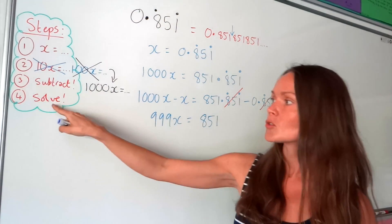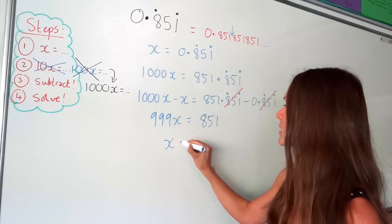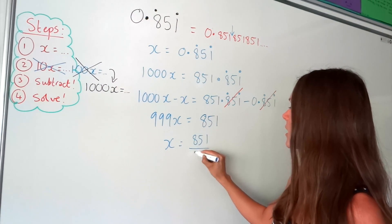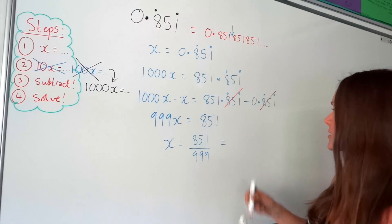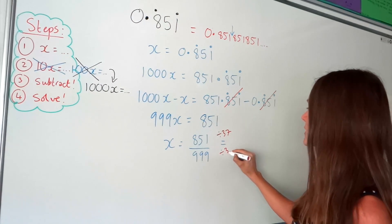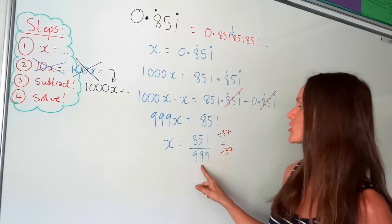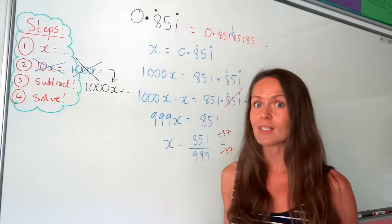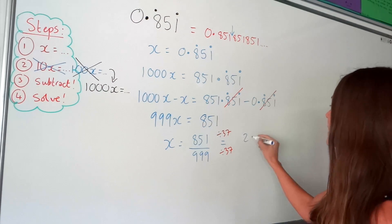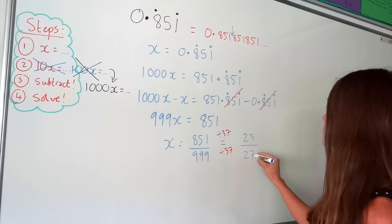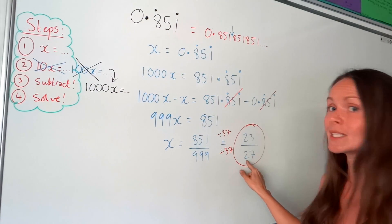The final step is to solve the equation by dividing both sides by 999, leaving me with the fraction 851 over 999. This fraction does simplify, though it's quite hard because the common factor isn't obvious — it's actually 37. You could use a calculator on that last step if needed. When we divide both by 37, we get 23 over 27. So this repeating decimal is written as 23 over 27.